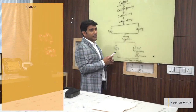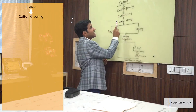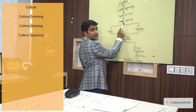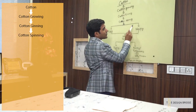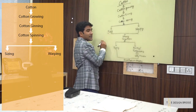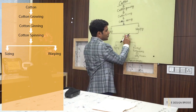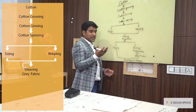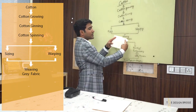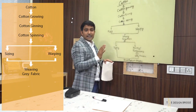Now let us understand how cotton is manufactured. The first step is cotton growing, then it goes for cotton ginning. The next step is cotton spinning, and after that it goes for processing — which is called warping and sizing. Sizing of cotton is done to strengthen the yarn. Then we come to the weaving part, and at this stage the fabric is ready — this is called grey fabric.